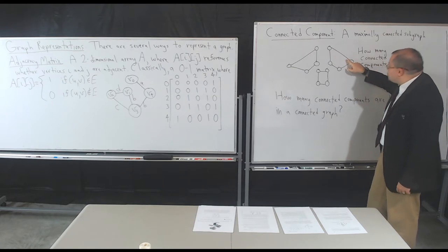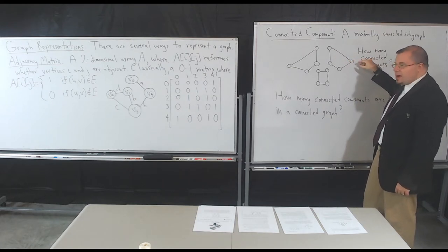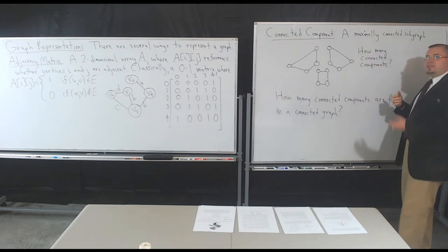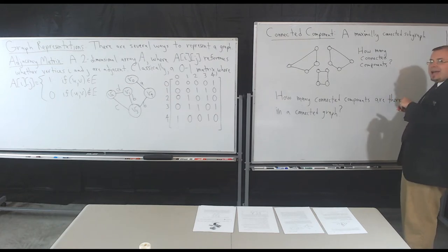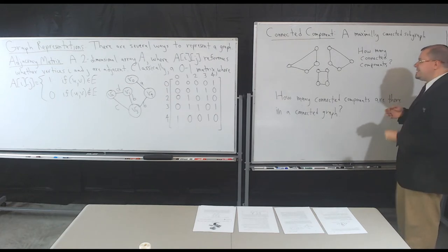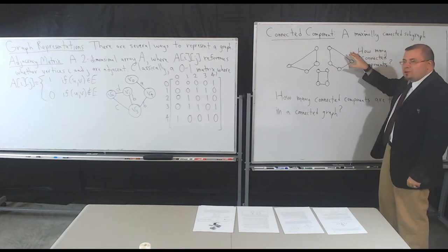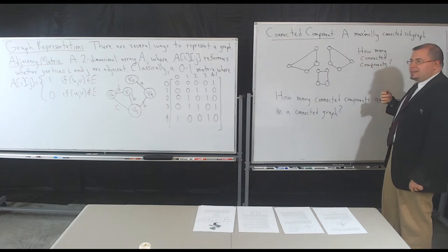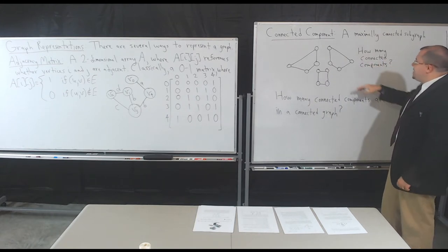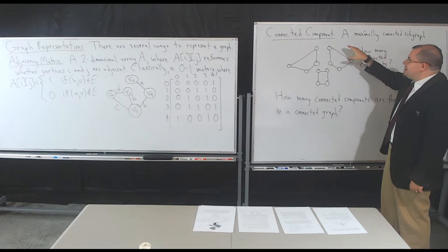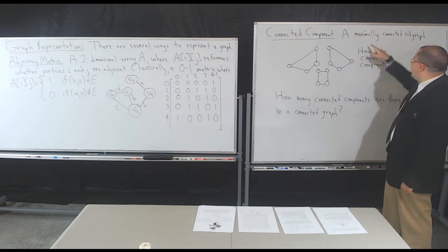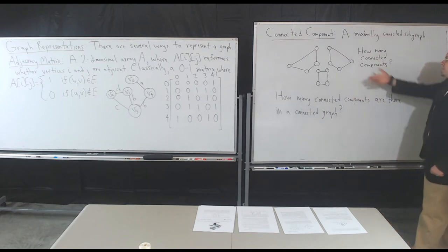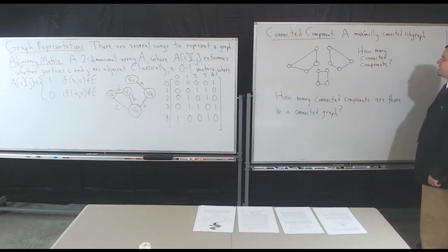That edge connects to another vertex. By maximally, it means that there cannot be any way to add another edge or vertex into this so-called chunk — which we'll call a connected component — without violating the property that it's connected. So I'm just going to keep going: if there is an edge and a vertex I can reach, I'm going to assume that it is maximal in terms of its size. So when you look at this graph, how many connected components are there?